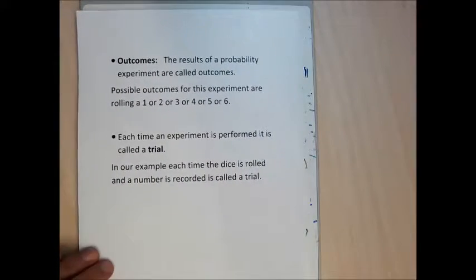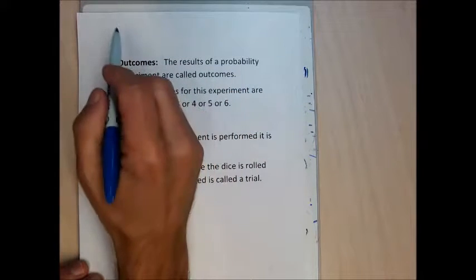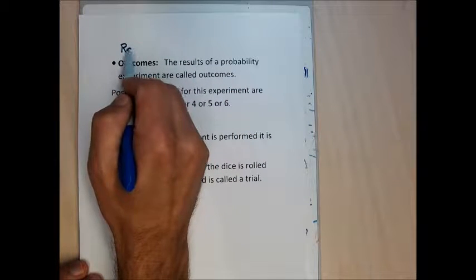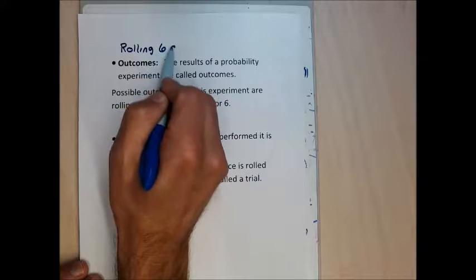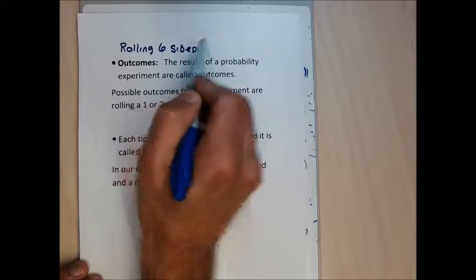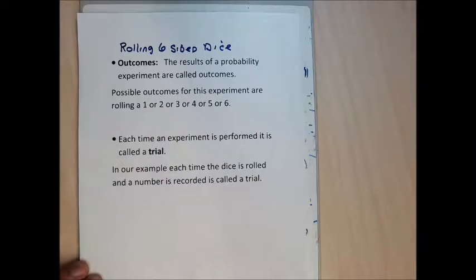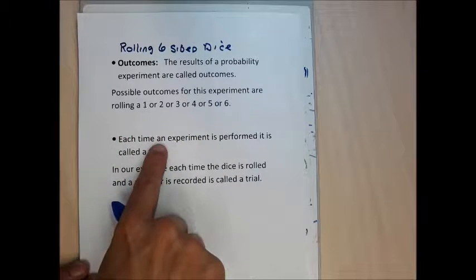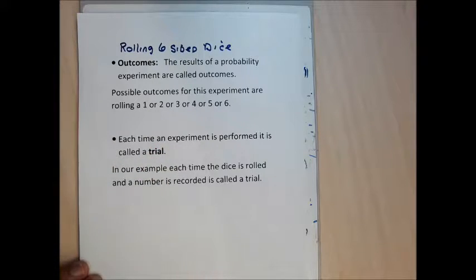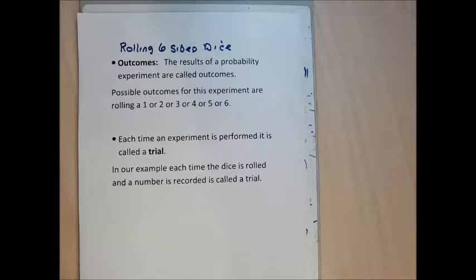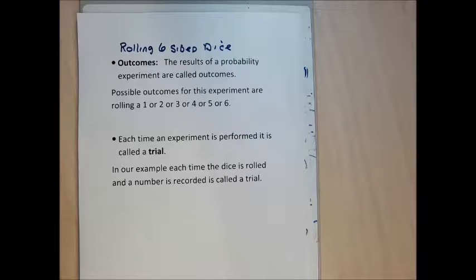Outcomes are the possible results of a probability experiment. This experiment is rolling a six-sided dice and recording the number that shows up on top. The possible outcomes are any number between one and six. Each time this experiment is performed is called a trial. I know the possible outcomes without actually rolling a dice because I can look at it and know what could come up.